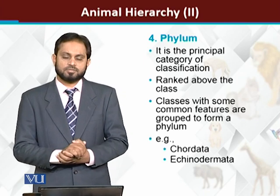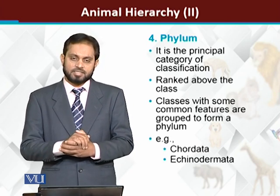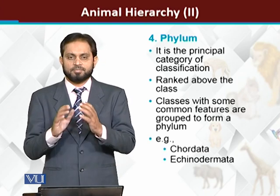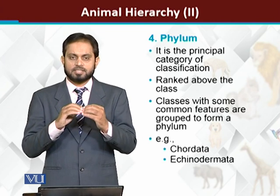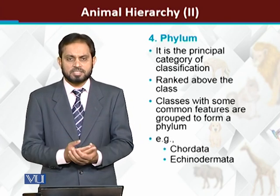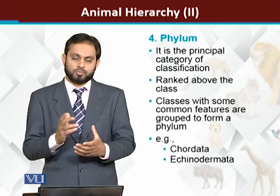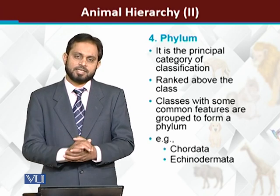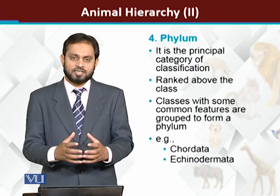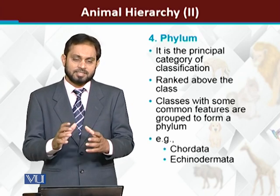After class, the next taxonomical or hierarchical level is the phylum. Phylum is considered a principal category in classification, where all related classes having common features are placed in one phylum. Phylum is above the class. For example, phylum Chordata includes all chordates — reptiles, amphibians, birds, and mammals. Similarly, phylum Arthropoda includes all insects and jointed-leg animals. Echinodermata includes marine animals like starfish and brittle stars that have a spiny appearance.